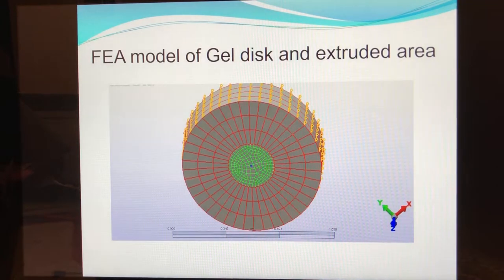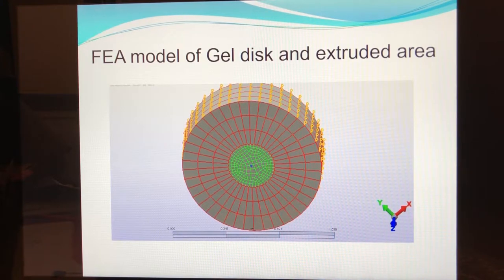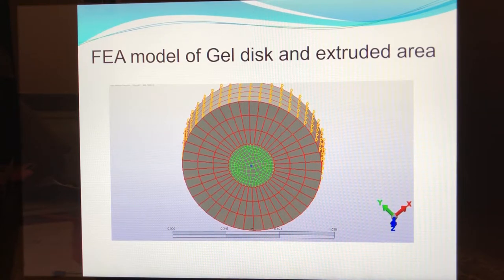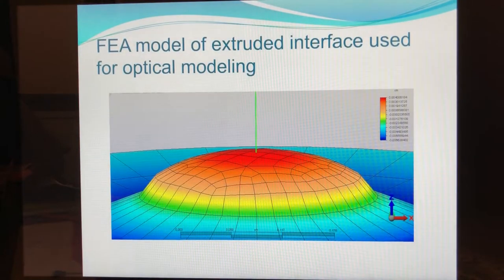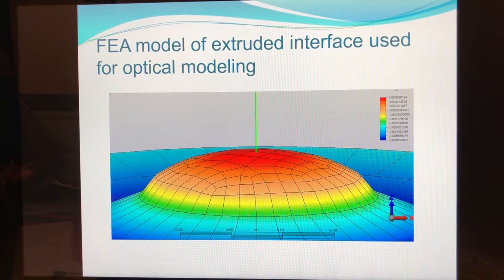We now have a concept, first-order design, and a best guess working prototype. Now we develop a mathematical model of the lens which will be verified by the prototype. Since the lens utilizes mechanical deformation, the model incorporates finite element analysis to produce a deformation of the accommodating refractive surface. The finite element analysis model provides us with a deformed refractive interface, shown here as having some oblate asphericity.